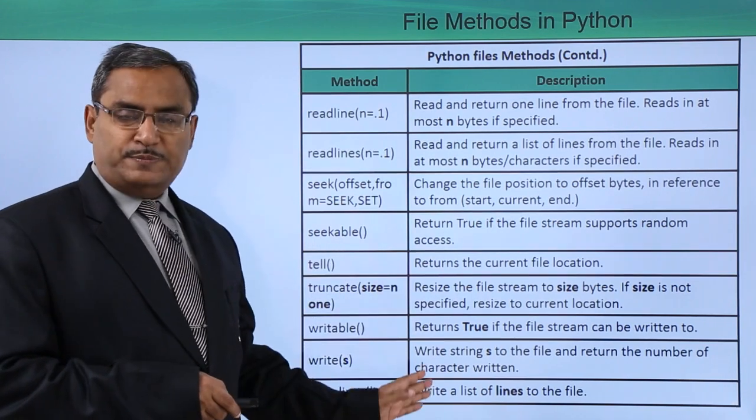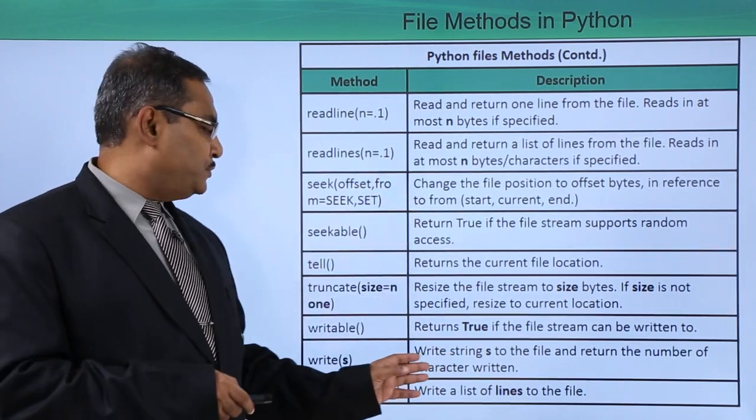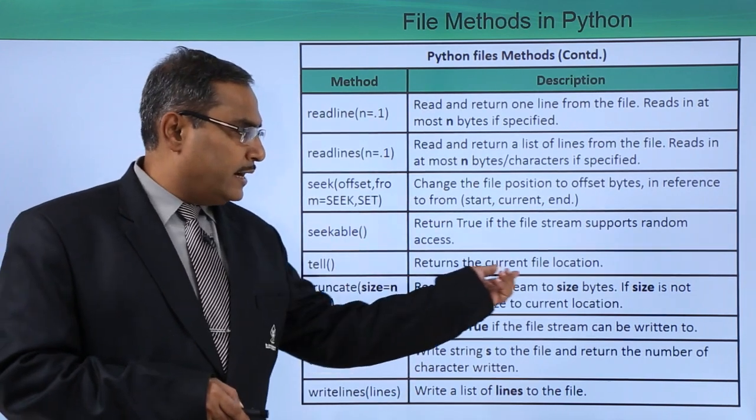What is the changes respectively that has been depicted in this method and the description column. Tell returns the current file location.